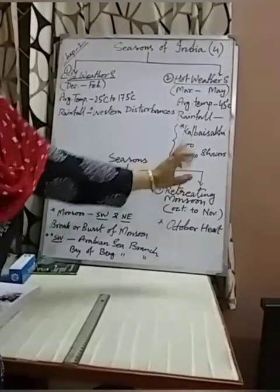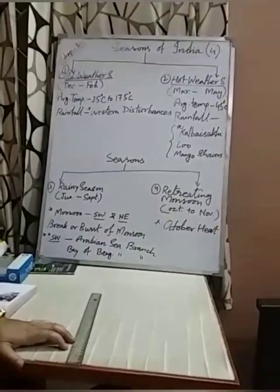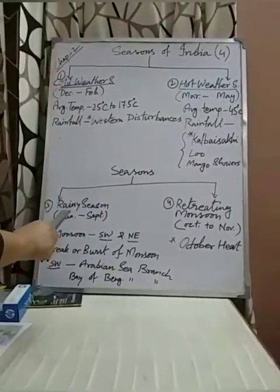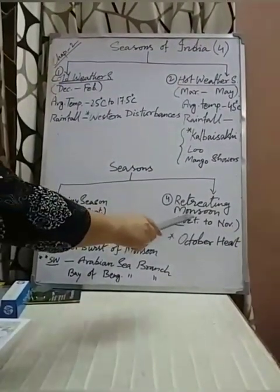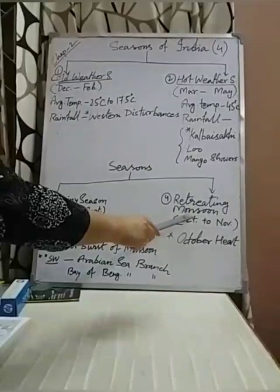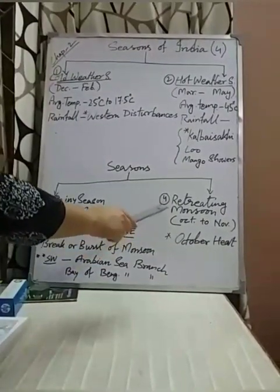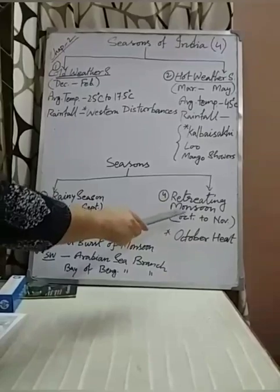Mango showers has one more name — cherry blossom. In Karnataka, it is called cherry blossom. Our next two seasons are rainy season and retreating monsoon season. I will start with number four first: retreating monsoon.